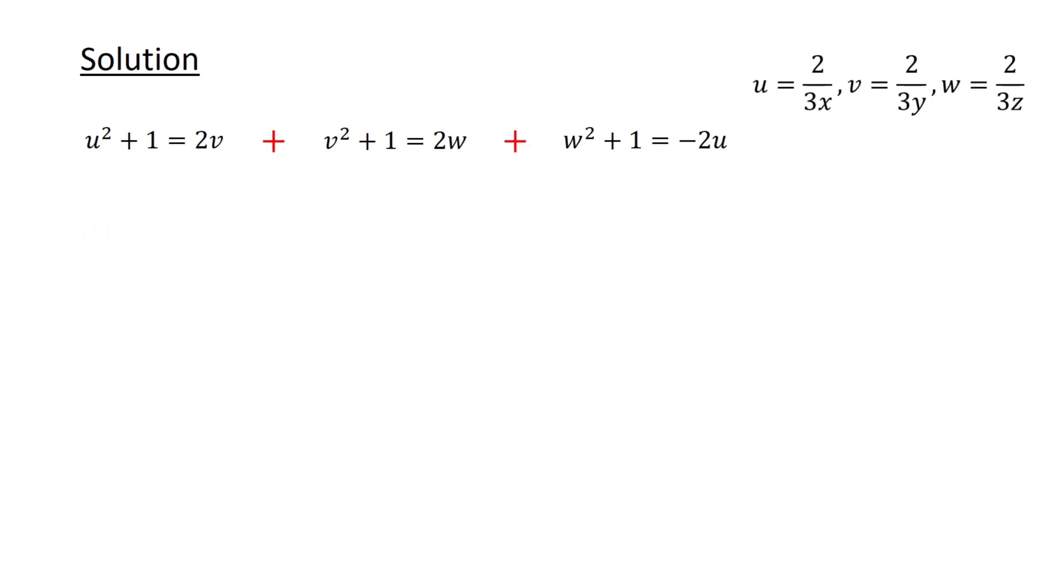Next, we add the three equations. And then add 2u and subtract 2v and 2w from both sides of the equation. To get u² plus 2u plus 1 plus v² minus 2v plus 1 plus w² minus 2w plus 1 is equal to 0.